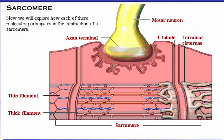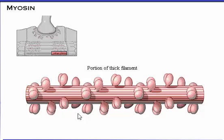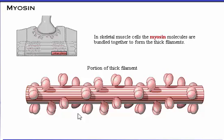Click a thick filament to examine its structure. The first molecule we will look at is the protein myosin. In skeletal muscle cells, the myosin molecules are bundled together to form the thick filament. Click the thick filament to see an individual myosin molecule.